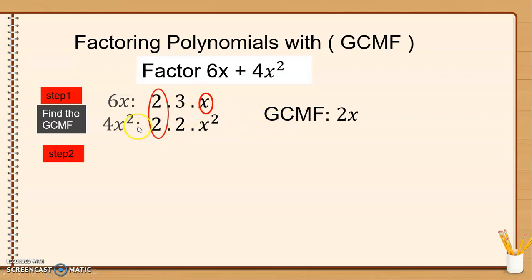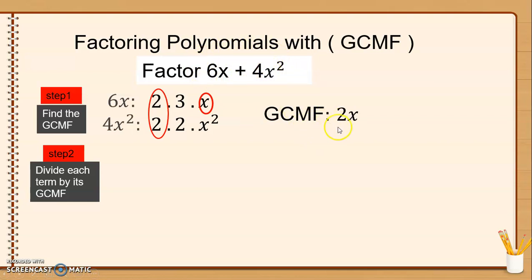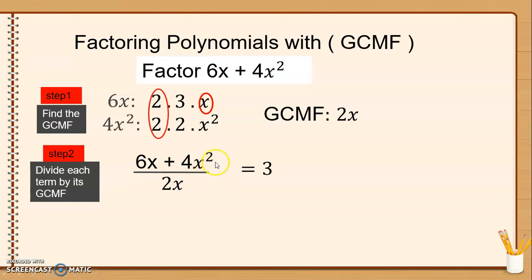Step number 2: Divide each term by the GCMF. Itong dalawang term natin, i-divide natin sa 2x — isa-isa. First term: 6x divided by 2x is equal to 3. Plus, 4x squared divided by 2x — x squared divided by x is x na lang, and 4 divided by 2 is 2. So the answer is plus 2x.